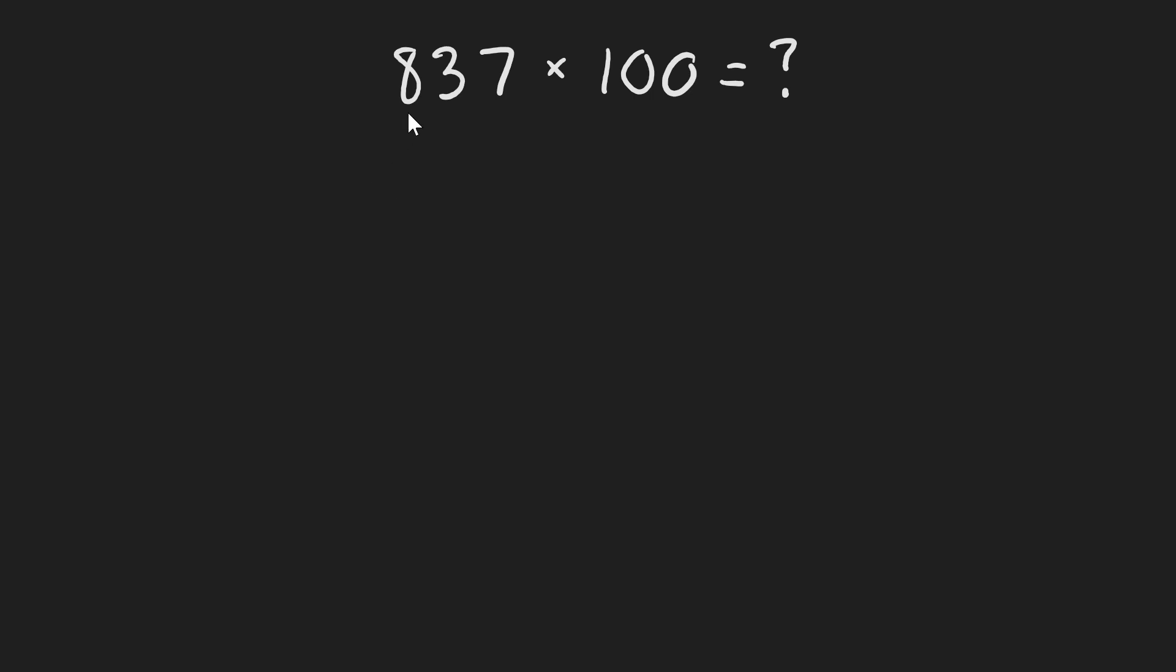So how do you multiply 837 by 100? Let's start with 2 times 100. 2 times 100 is 200. And 200 is just 2 with two zeros appended to the end of it.